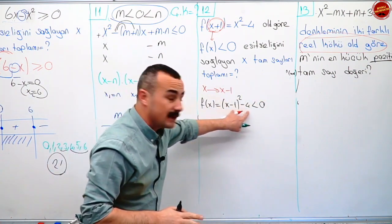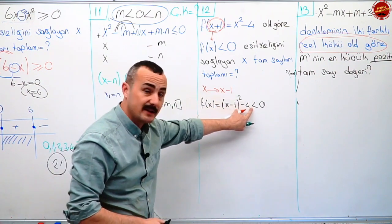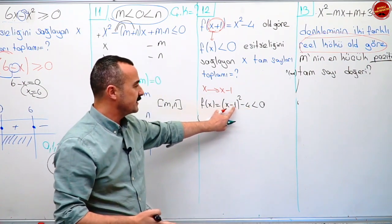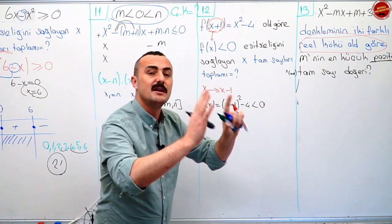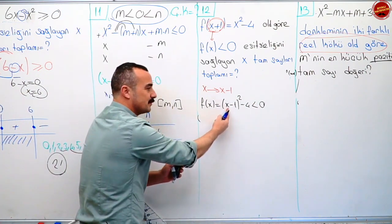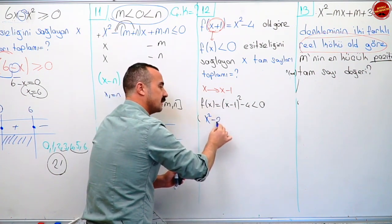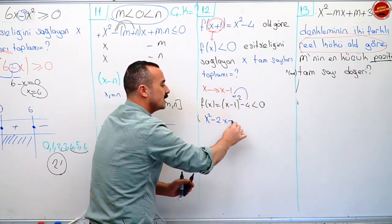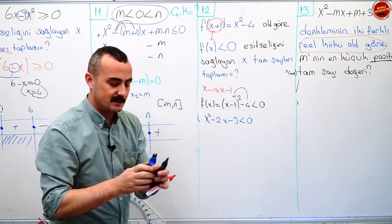Şimdi burayı çarpandan ayırman lazım. İsteyen burayı iki kare farkı yapabilir. İki kare farkı yaparsan direkt çarpandan ayırılmış olur: x eksi bir eksi iki çarpı x eksi bir artı iki. Ben açıp yapacağım. Birincinin karesi x kare, birinci ile ikincinin çarpımının iki katı eksi iki x, ikincinin karesi artı bir gelecek. Eksi dörtte eksi üç yapacak. Küçükmüş sıfır.